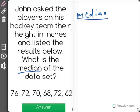what we need to do first is put these numbers in order from least to greatest. So the least number I see is 62, then 68, then 70,